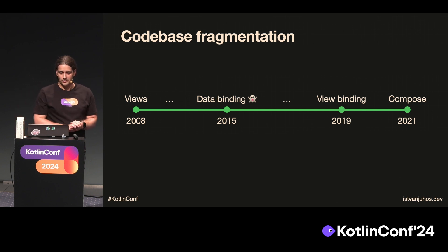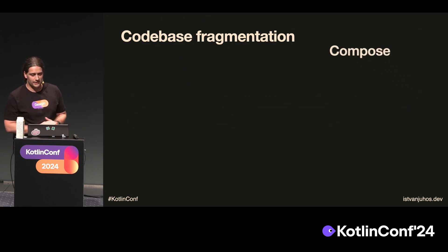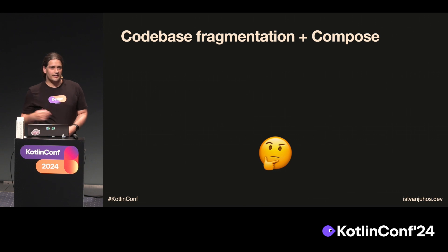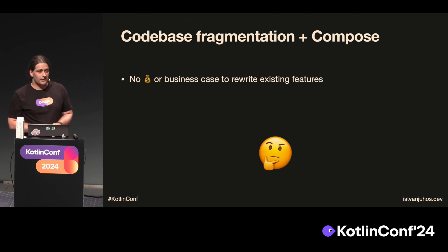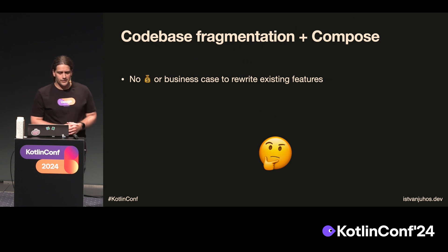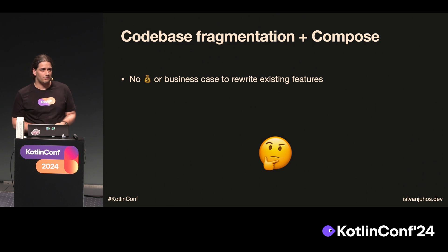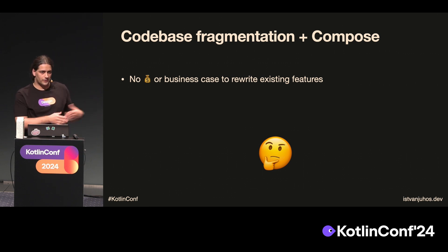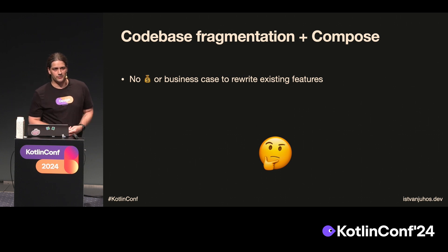Let's say Compose was released and we want to rewrite everything to Compose. That's a great dream, but in reality it could be more like this: you have your existing code base fragmentation with everything in your old lab, and then you just add Compose to it. Why can that happen? You or your team or company might not have the resources, time, or money to do a complete rewrite. The application might be big, or the business might be small. Or there's no business case, because of the saying 'don't touch what works.' No one wants to touch what works because they are afraid of the old lab, or those things generate money for the company.